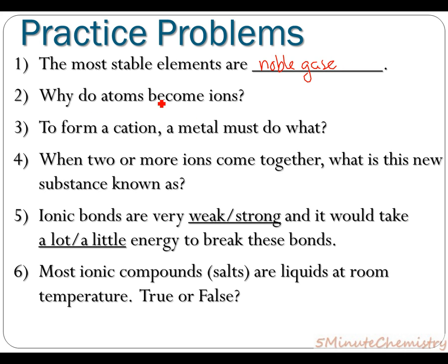Why do atoms become ions? Atoms become ions in order to become more like these noble gases, to fill their valence shell, and to become, more importantly, more electrically stable.